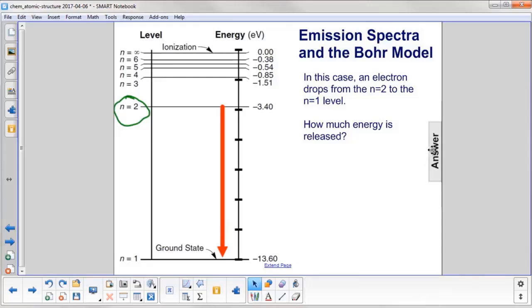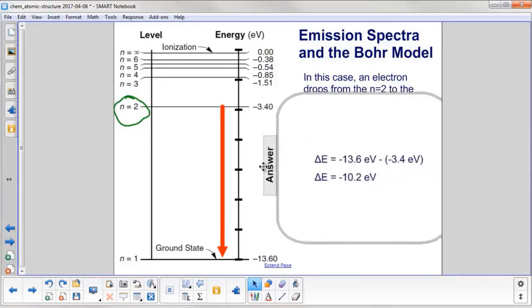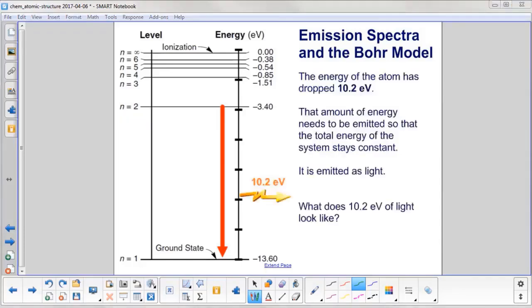Well, let's see. We start with our final energy, which is negative 13.60 eV. We subtract the initial. Most of physics, it's always final minus initial. And we get a change in energy of negative 10.2 electron volts. So the energy of the atom has dropped by 10.2 electron volts. Its potential energy has gone down.